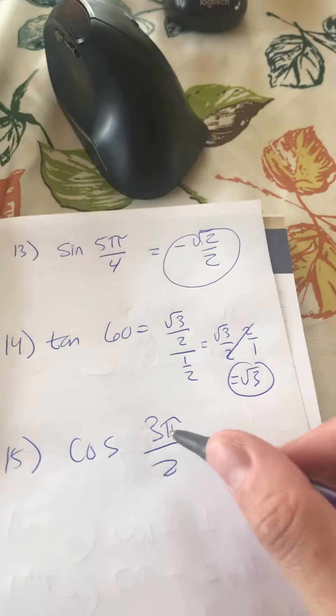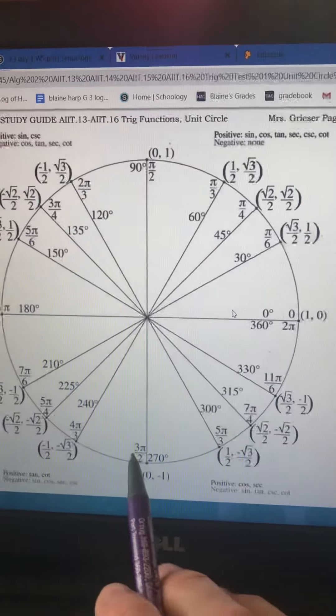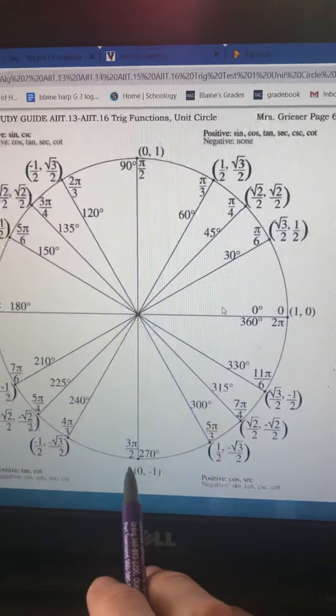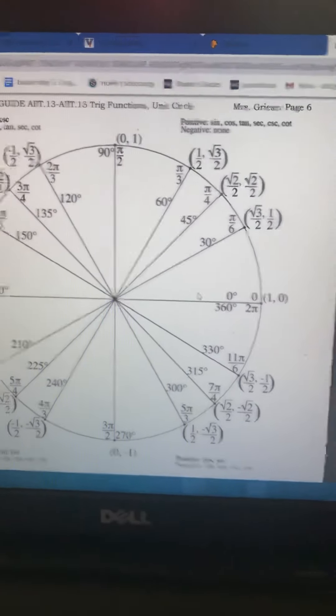Finally, number 15, cosine 3π over 2. Look for 3π over 2 on the unit circle. Found it. They want the cosine, which is the x value, so just the first part of the coordinate.